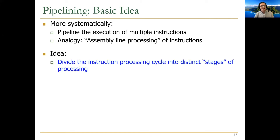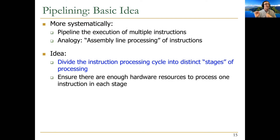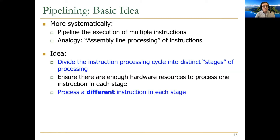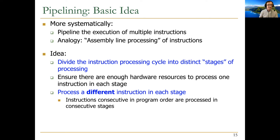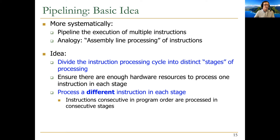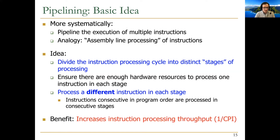Similar to a car assembly factory, we're going to divide the instruction processing cycle into distinct stages and ensure there are enough hardware resources to process one instruction in each stage. We shouldn't miss any hardware resources for a given stage — that's why we need separate instruction memory and data memory, or additional ports. In each stage we process a different instruction, with consecutive instructions in program order processed in consecutive stages. At the higher level we preserve the sequential von Neumann programming model.